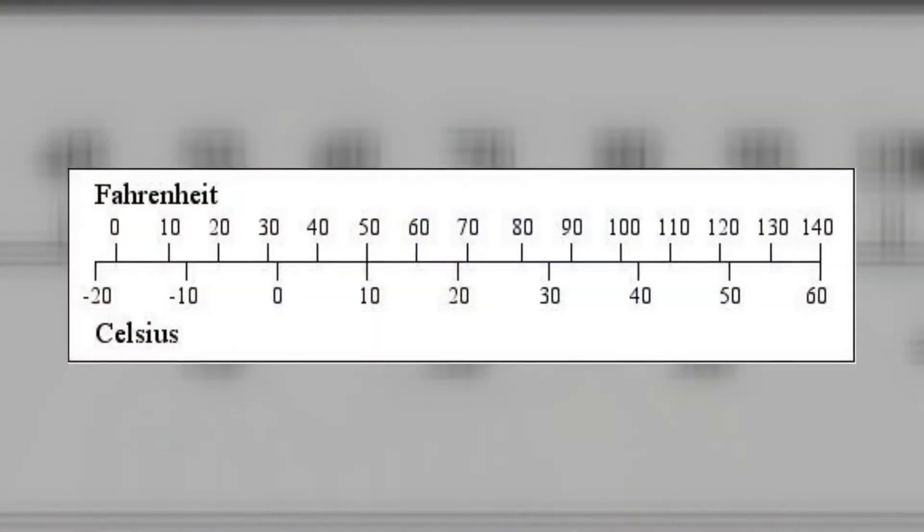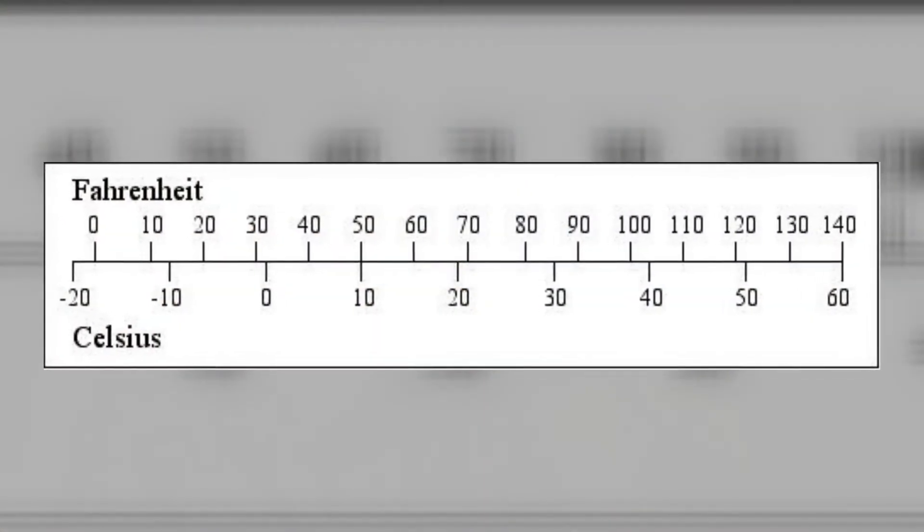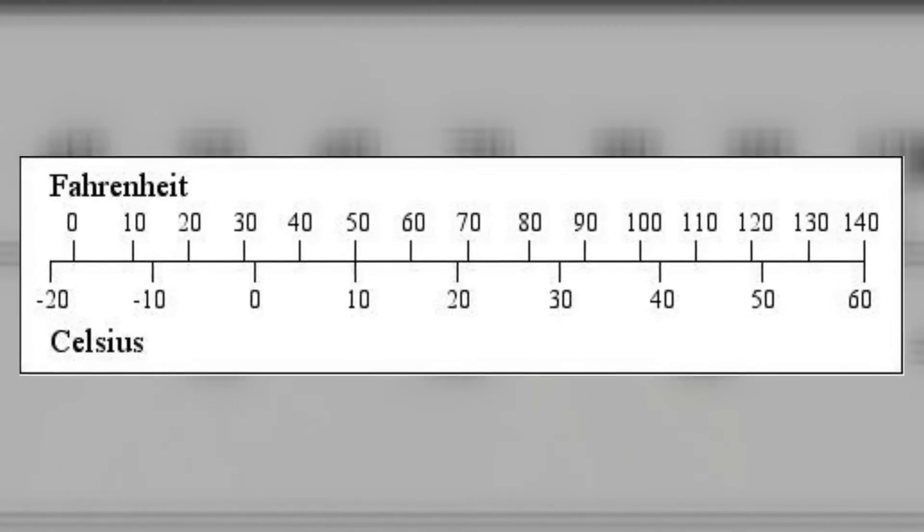So the Celsius scale has 100 graduations between freezing and boiling, while the Fahrenheit scale has 180 graduations — that means it's almost 2 degrees Fahrenheit per degree Celsius. That gives us something we can visualize and understand.